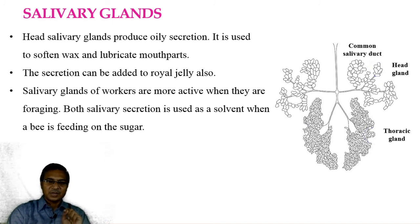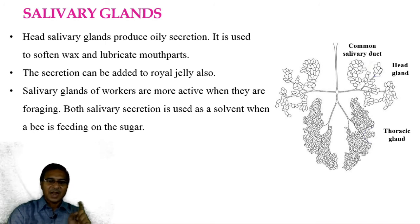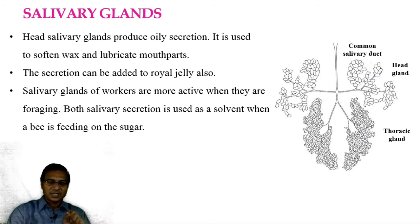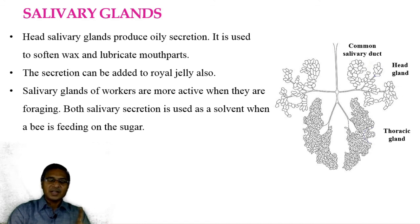During foraging, both salivary gland secretions — from the thoracic gland and from the head gland — are used as a solvent when a bee is feeding on sugar. Certain enzymes are present which have the ability to digest the sugar content present in that sugar solution secreted by the gland.